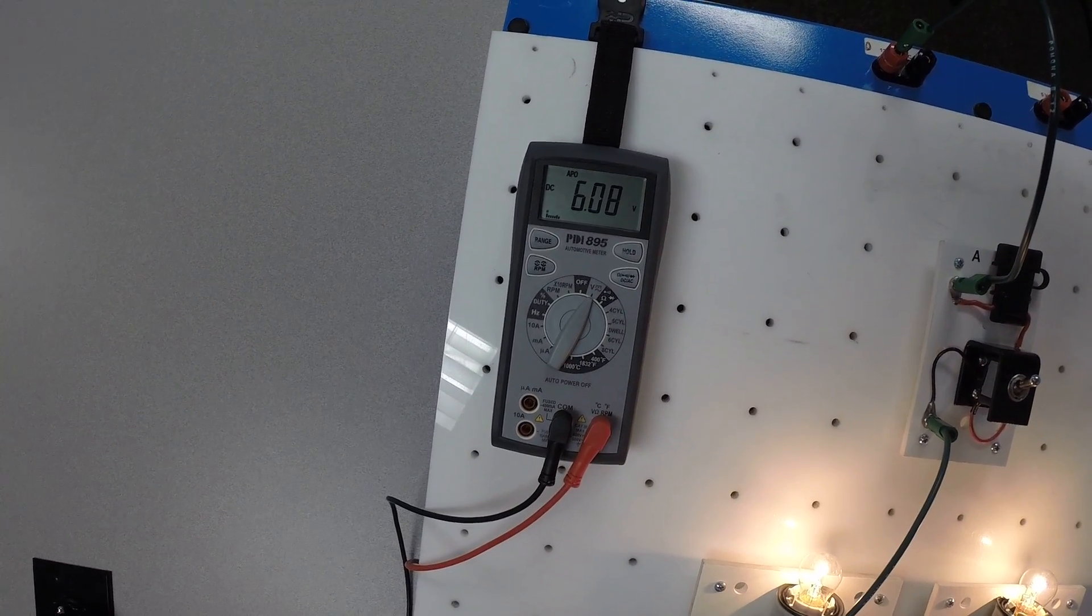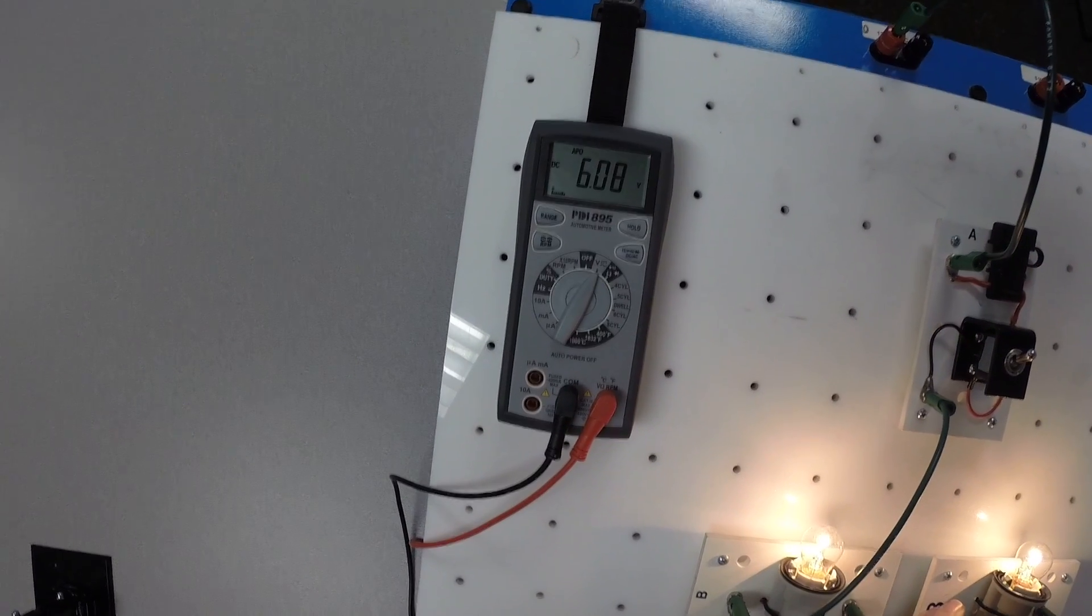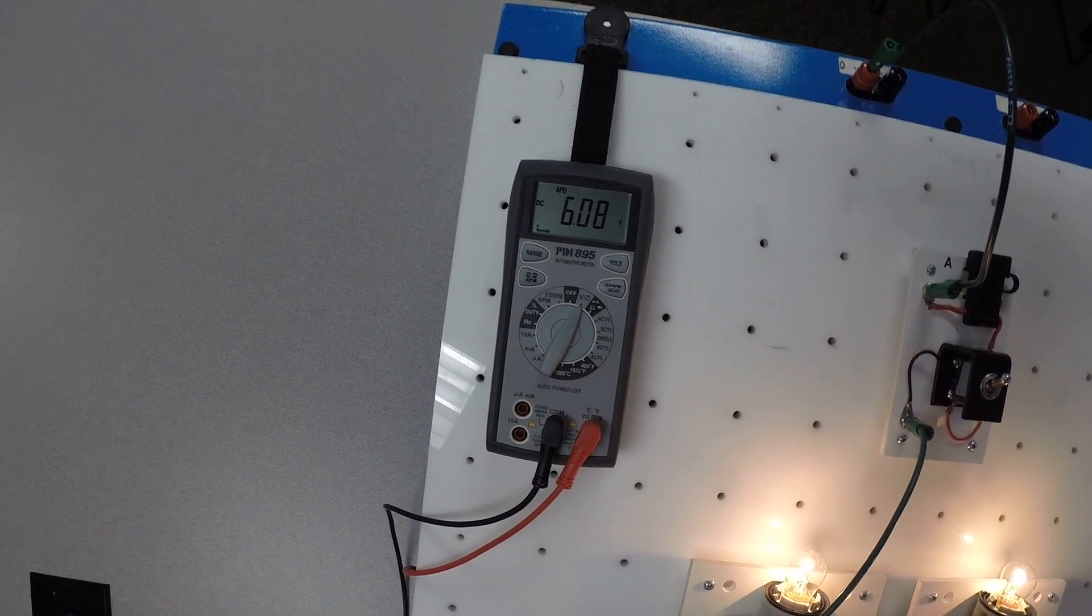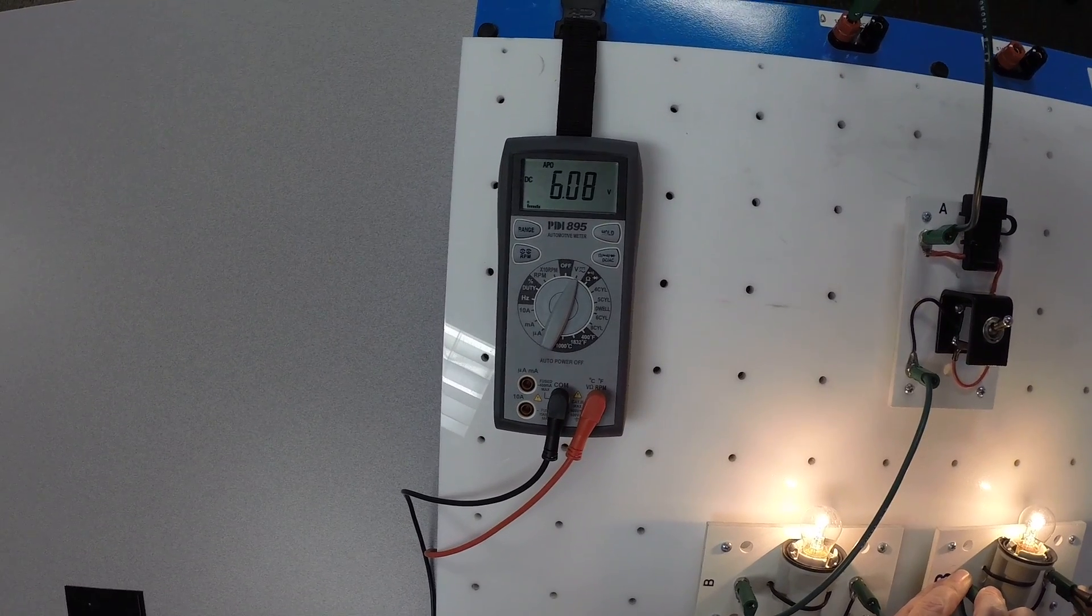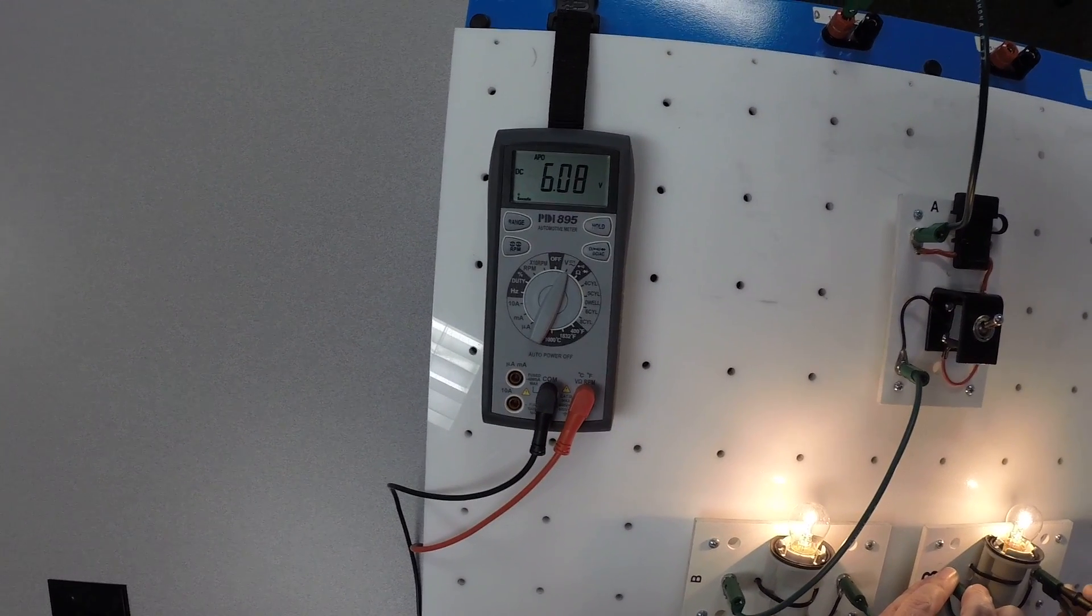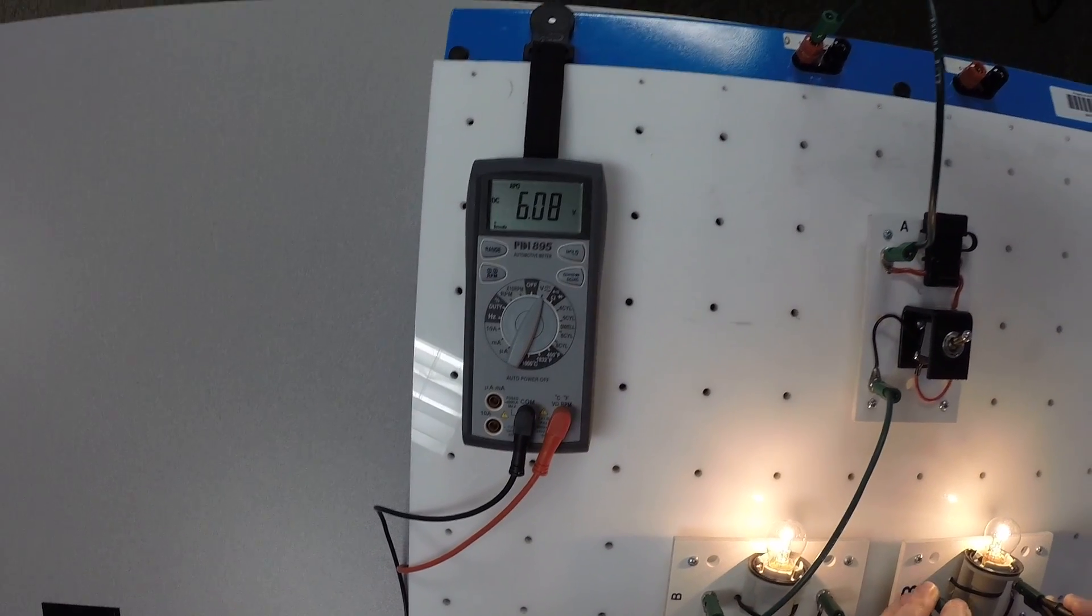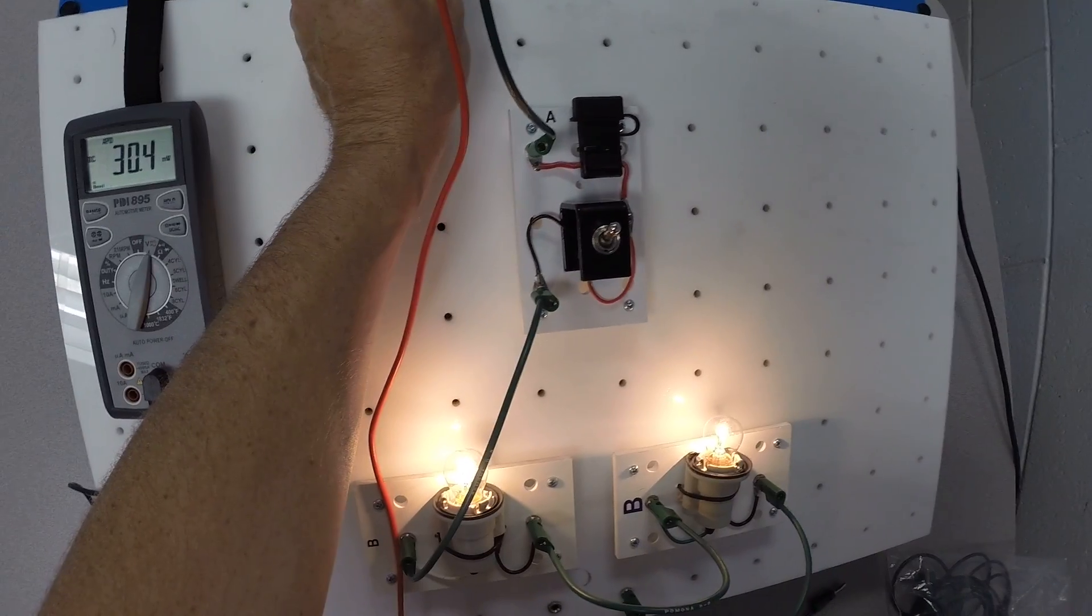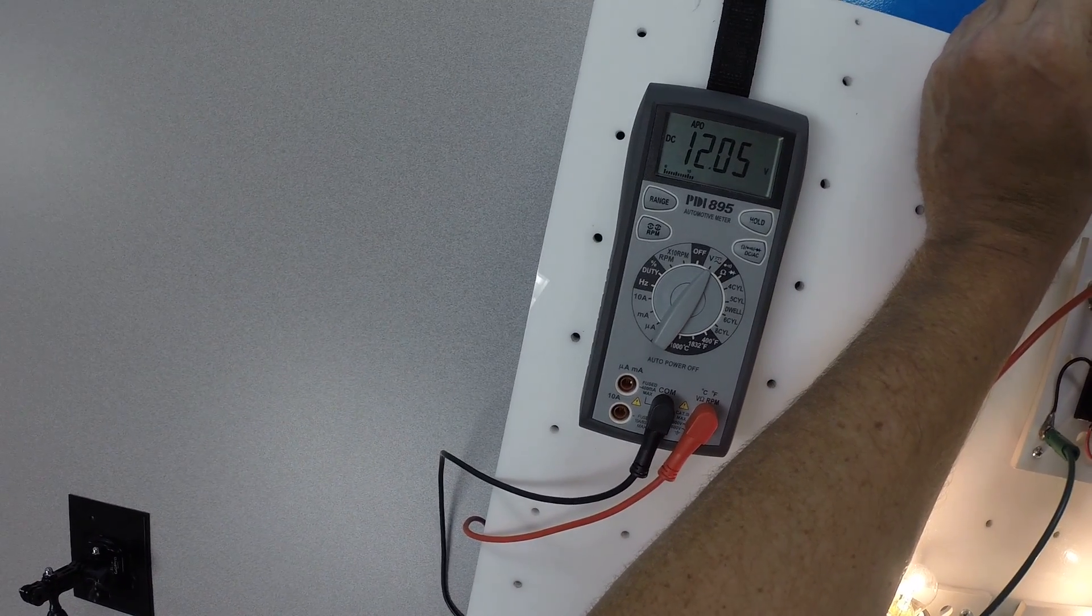Well, let's look at the total voltage because Kirchoff, who was an old dead scientist that studied voltage and came up with a couple of laws pertaining to the way voltage behaves in a circuit, says that the sum total of all voltage drops in a circuit should equal source voltage. So I'm going to put my red lead up there, my ground lead down here, and you can see we have just over 12 volts.